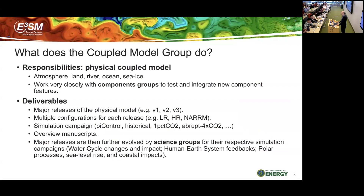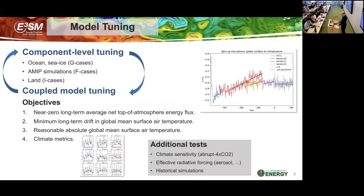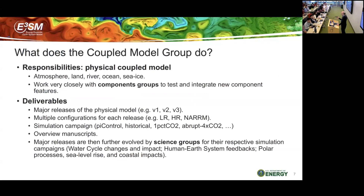We do major releases of the physical coupled model: V1, V2, V3. We try to do a new major release every three years and we are now at the V3 release. For each release there are multiple configurations depending on the grids available — low resolution, high resolution, North American regionally refined meshes. For each model version and configuration, we run a set of simulation campaigns. Standard CMIP-type simulations we use to benchmark the model include PI control, historical, 1%CO2, and so forth. We are also responsible for writing overview manuscripts describing those major releases, which are then further developed by the science group for their respective science simulation campaigns.